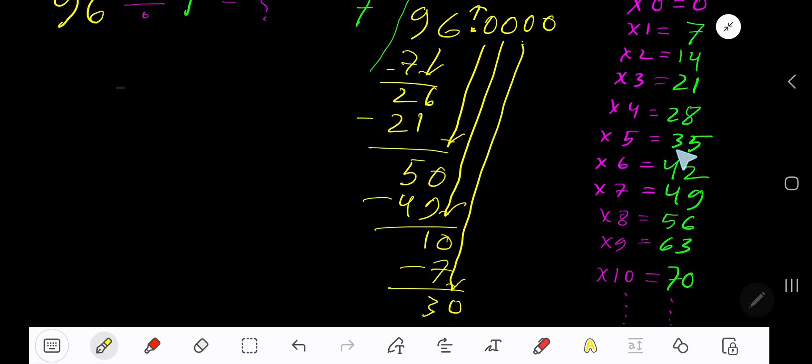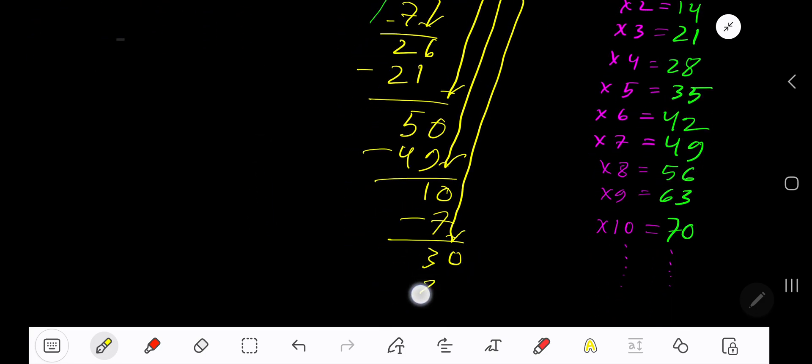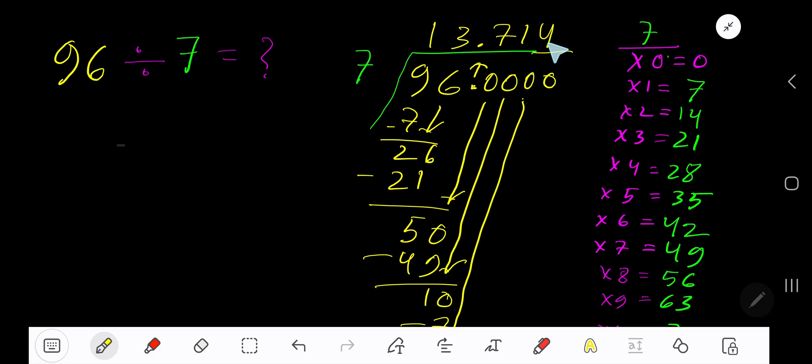7 goes into 30 how many times? 4 times. 4 times 7 is 28. Subtract to get 2. You can bring down more zeros, but since we have three places after the decimal, we'll stop here. So our answer is 13.714.